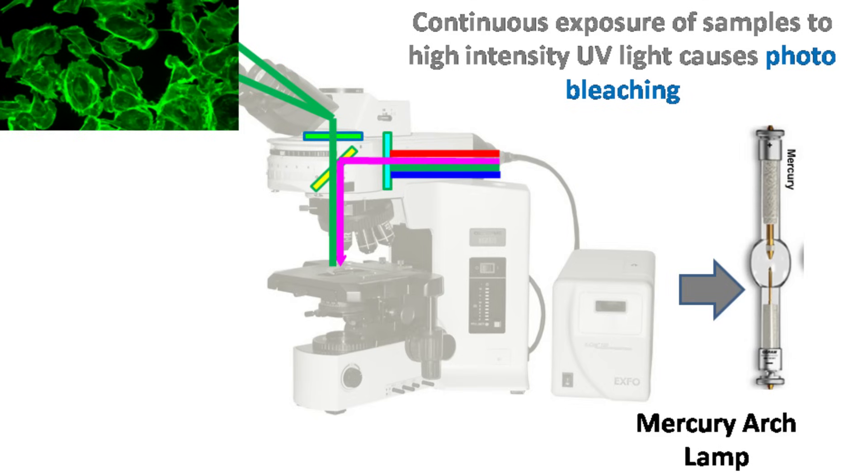In fluorescence microscopy, it uses a high-intensity UV light. As the samples are continuously exposed to high-intensity UV light, it causes photo-bleaching.